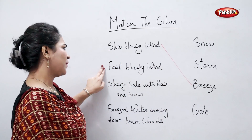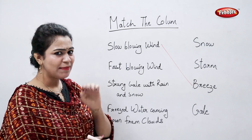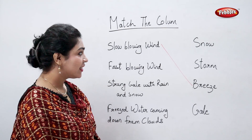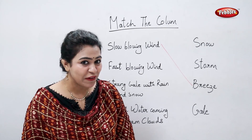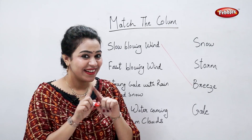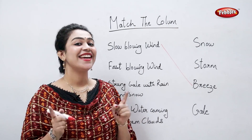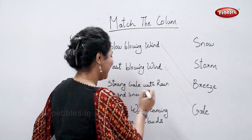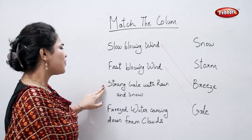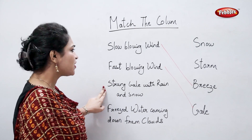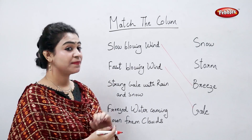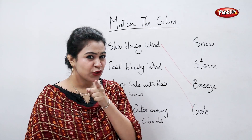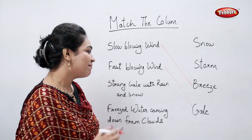Fast blowing wind — tell me, fast blowing wind is called? Is that snow? No, that's gale. Strong gale with rain and snow? That's storm. Perfect.